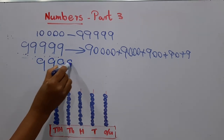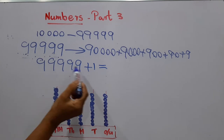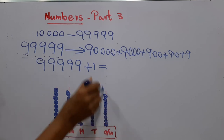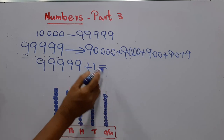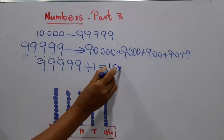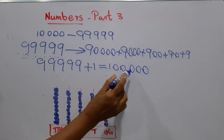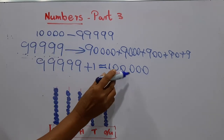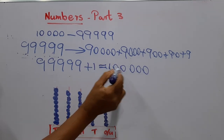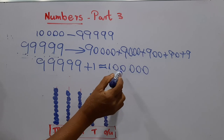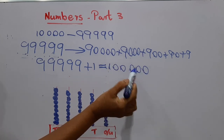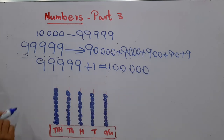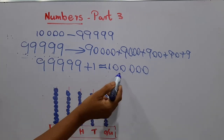If we add one to this number, can we add another ring here? No — this place is full. We can't add more rings. So what will the number be? It becomes a six-digit number — one, two, three, four, five, six places. We come to hundred thousand. That is one hundred thousand, a six-digit number.